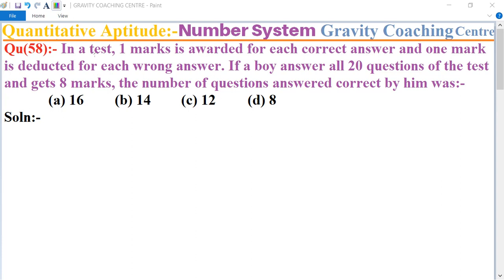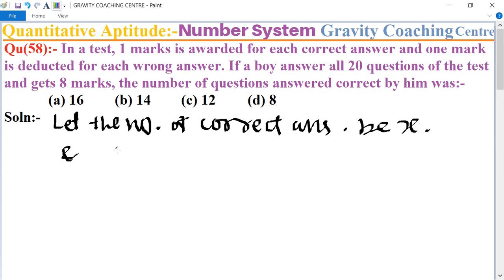First we let the number of correct answer be x, and the number of incorrect answer, that 20 minus x.